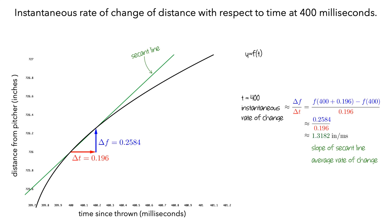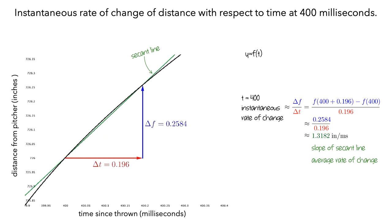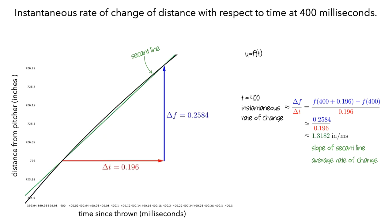How close is it? Let's take a closer look. We can see that there is still a difference between the graph of f and the green secant line.